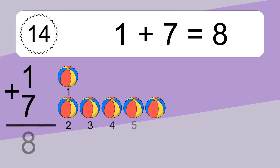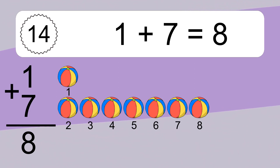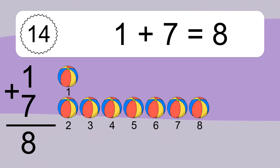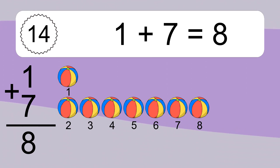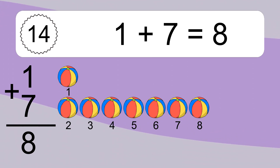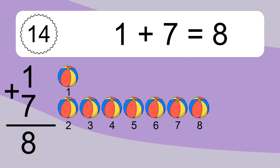1 plus 7 equals what? 1 plus 7 equals 8. Let's count it. 1, 2, 3, 4, 5, 6, 7, 8.